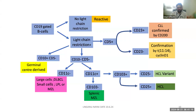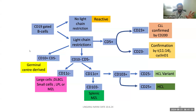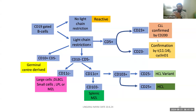When interpreting flow cytometry for chronic lymphoproliferative disorder, first gate on CD19, then look for light chain restriction. If kappa or lambda restriction is present, the clone is monoclonal. Then assess CD5 and CD10. If CD5 positive, check CD23 — positive suggests CLL, confirmed with CD200; CD23 negative points toward mantle cell lymphoma. CD5/CD10 negative group includes SMZL, hairy cell, and LPL, differentiated by CD11c, CD103, and CD25.